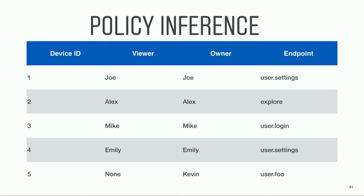A very simple example is user preference — on any endpoint, only the user itself should be able to access the preference. With hundreds of data types on Instagram, we want an automated way to build a relationship graph and analyze common relationships. This table roughly shows how the system works — we are building the relationship graph for a device object. We log the device, the viewer, the owner, and the endpoints of all device object data access. In production we sample a much larger data set. With a reasonable data set, you can see that in most cases the viewer is actually the owner, so we can conclude that the privacy rule should allow access if the viewer is the owner. But of course there are exceptions — if 99% of endpoints satisfy a certain relationship but one or two do not, that's a way to flag discrepancies through data access.